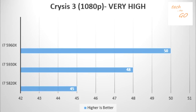On Crysis 3 at 1080p resolution on very high settings, the i7-5960X runs at 50 frames per second, the i7-5930K at 48 frames per second, and the i7-5820K falls behind at 45 frames per second.